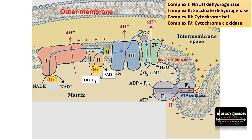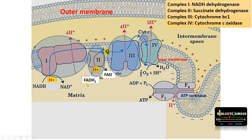Now let us see the four complexes. The first one is NADH dehydrogenase — as the name suggests, it receives NADH. The second one is succinate dehydrogenase, which receives electrons from FADH2. The third one is cytochrome BC1 and the fourth one is cytochrome C oxidase — the final complex from where electrons reduce oxygen to form water. The fifth complex is ATP synthase, a multi-enzyme complex involved in the synthesis of ATP.